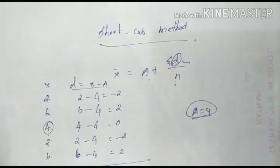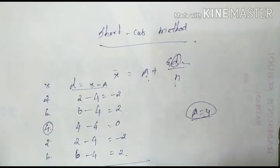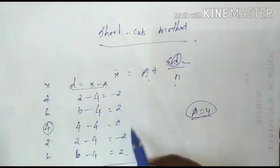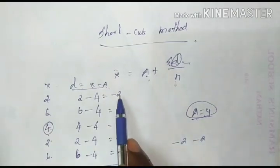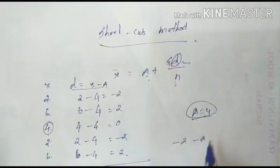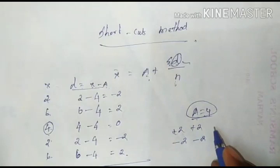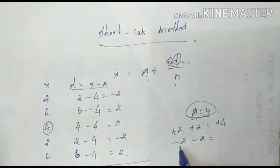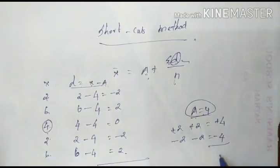Now we sum the d values. We have plus values and minus values. Minus two and minus two gives minus four. Plus values: plus two and plus two gives plus four. So plus four minus four = 0. The sum of d (Σd) is zero.